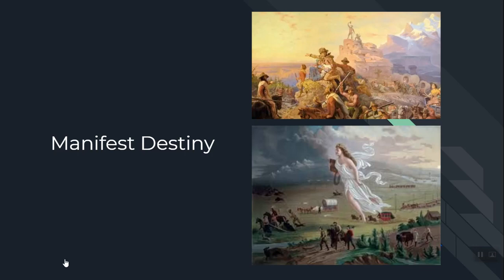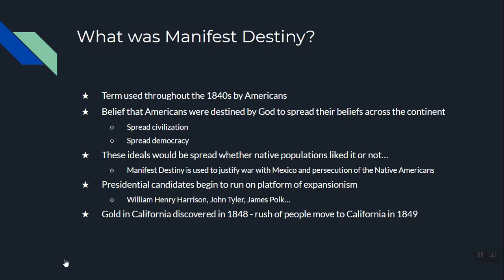Here are two very famous pictures that depict Manifest Destiny. At the top you've got pioneers moving west, and at the bottom you've got Lady Liberty going from east to west, moving American ideals with her. Manifest Destiny is a term used throughout the 1840s by American citizens — the idea that Americans were destined by God to spread their beliefs across the continent. I usually like to say God said go west, and Americans were supposed to spread civilization and democracy.